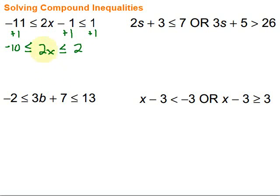Then we continue working to get that x by itself. We divide by 2 across all three sections. Negative 10 divided by 2 is negative 5, less than or equal to x — which is what we want — less than or equal to 1. Now we are at a point where we can graph this.